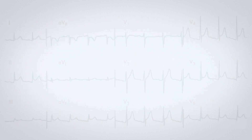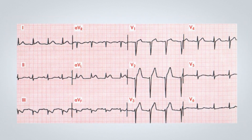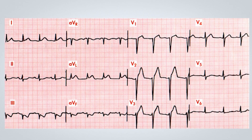Here is the first electrocardiographic tracing. I suggest pausing the video to carefully analyze the ECG. Now let's move on to the second tracing, which represents the second patient with the same chest pain symptoms, also 50 years of age. Again, I suggest pausing the video to carefully analyze the ECG.